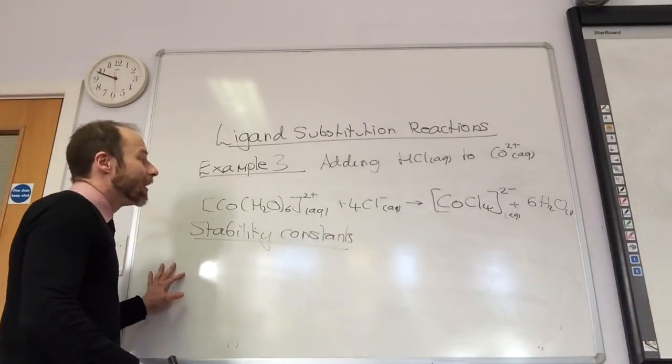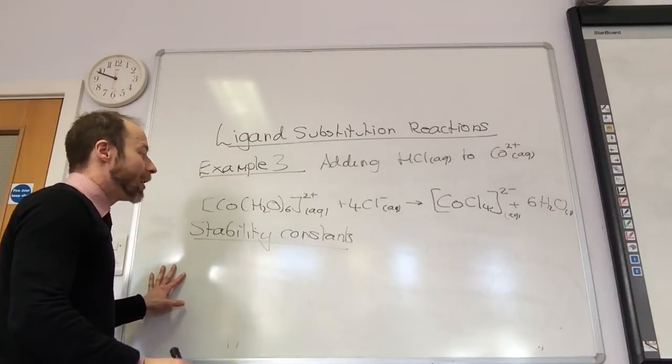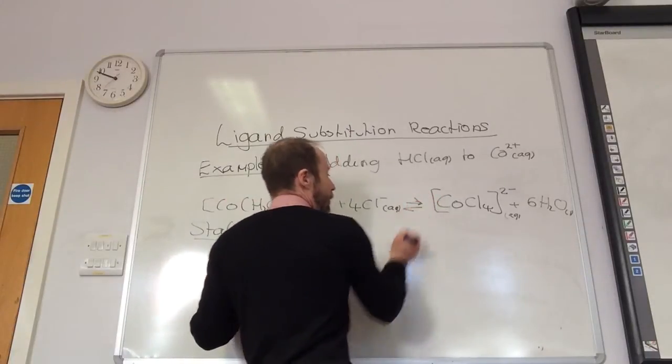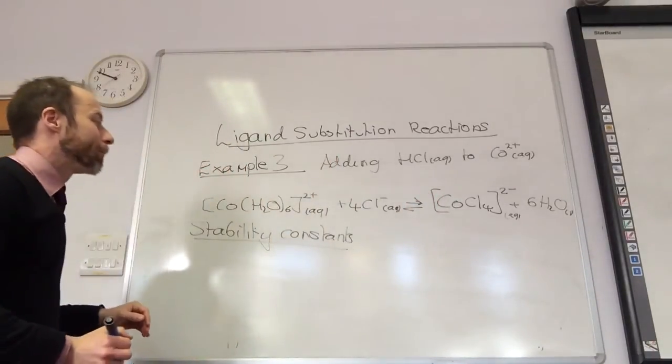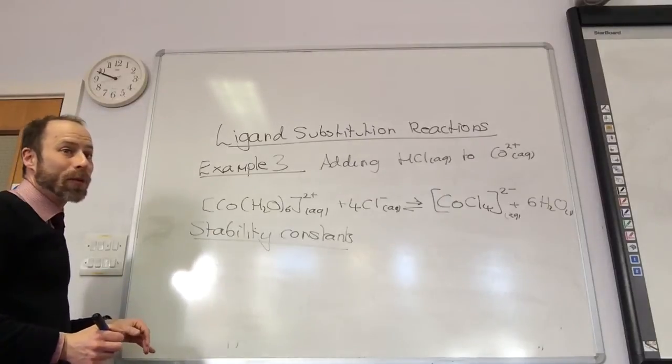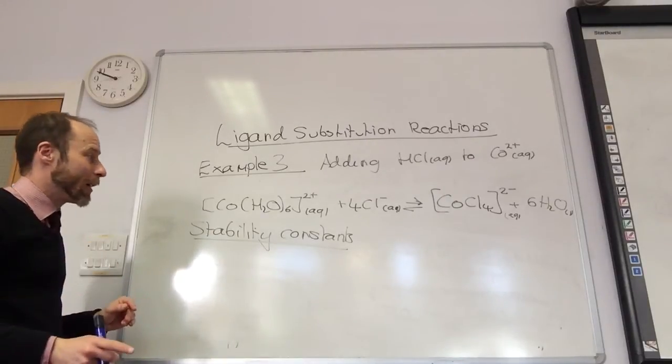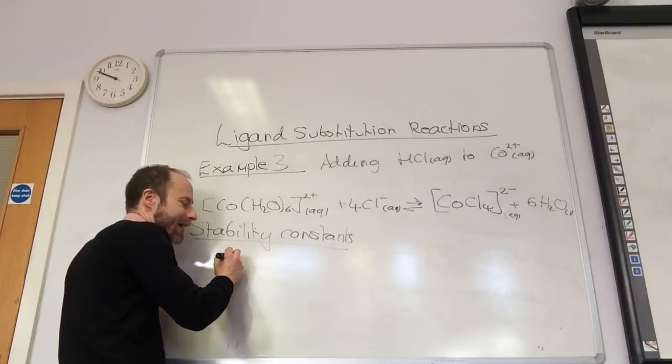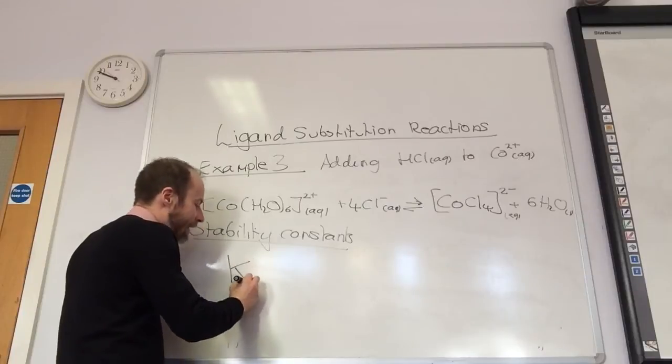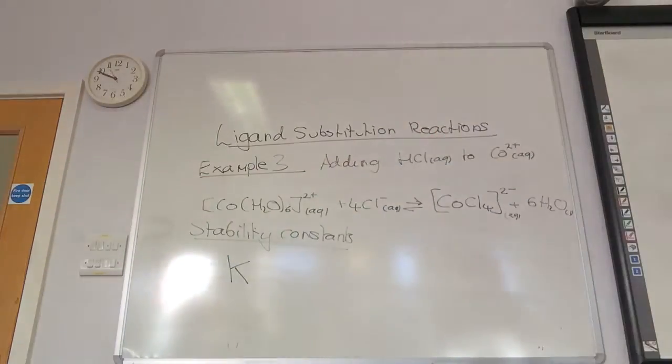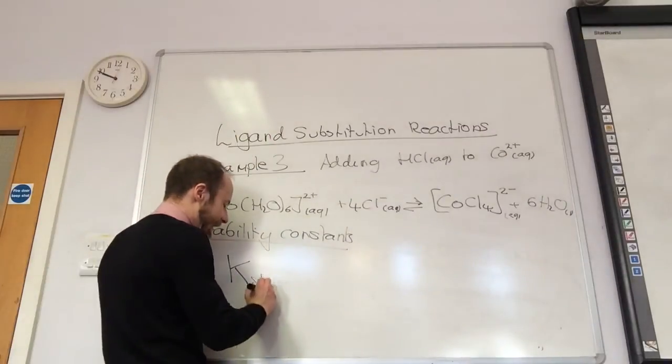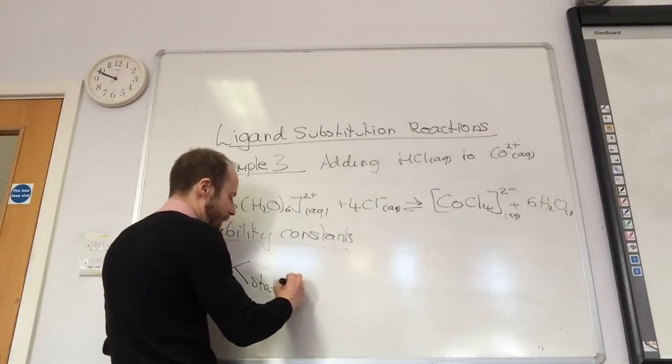So, you're going to be really excited to hear that we can use a new form of equilibrium constant, I believe, so I'm going to now change this arrow to an equilibrium, and we can now use an equilibrium constant. So, think back to your equilibrium constant. We're going to use K again. We actually call this, rather than Kc, we call it Kstab, which is nice. Kstab.